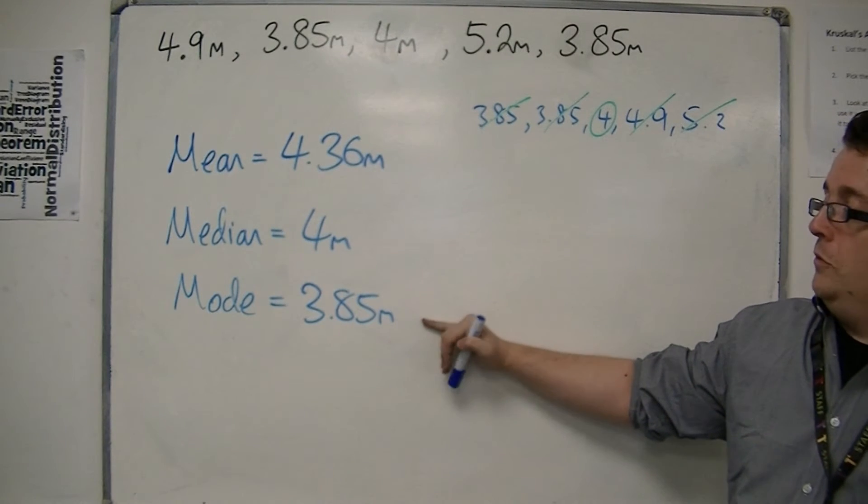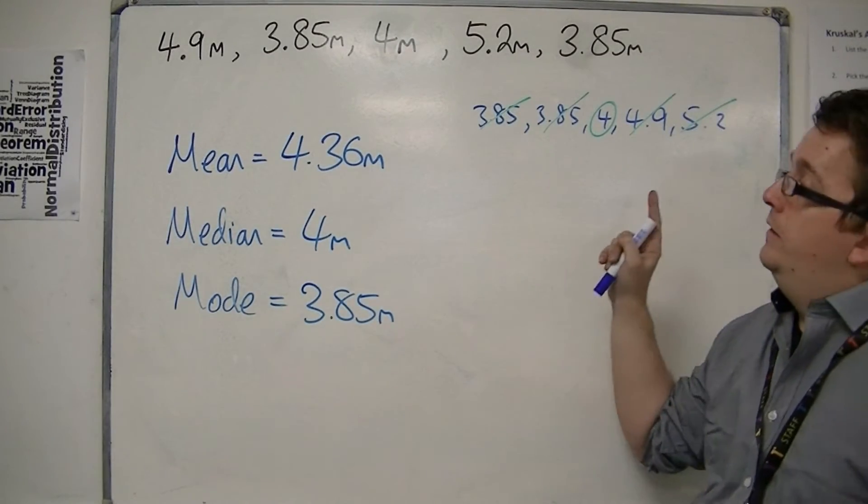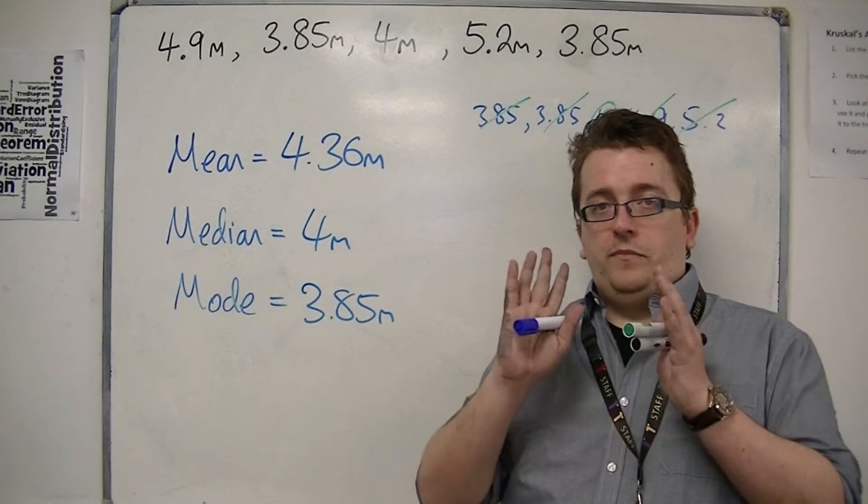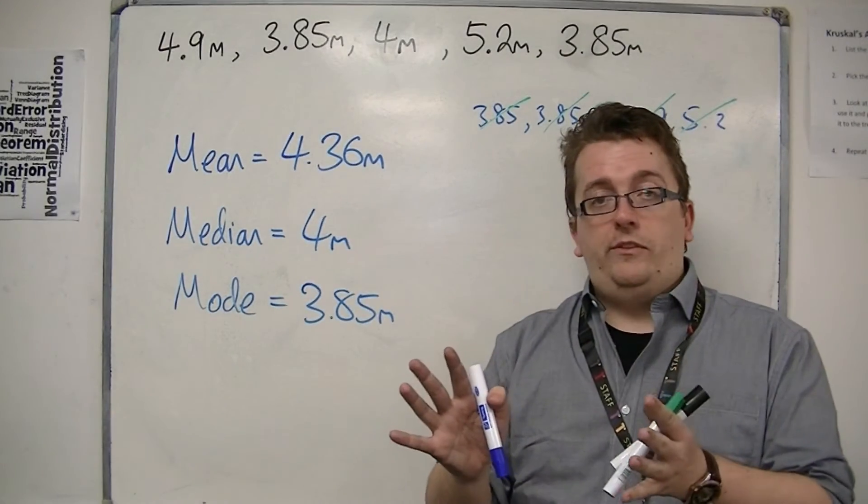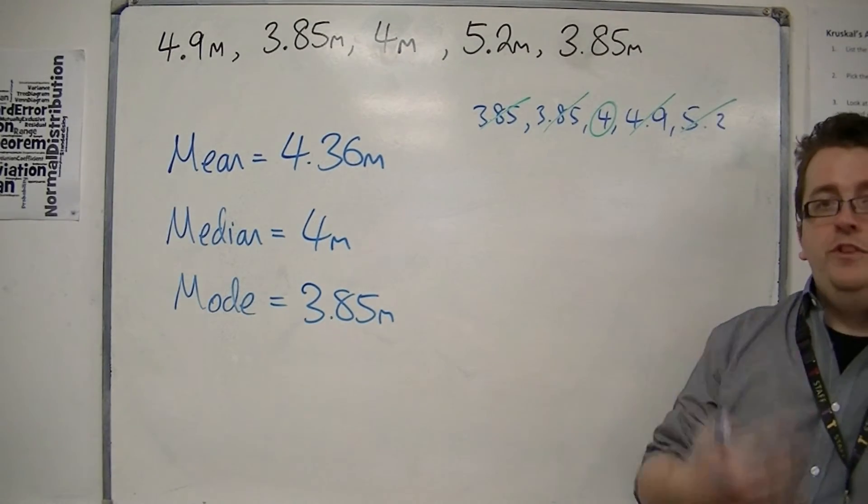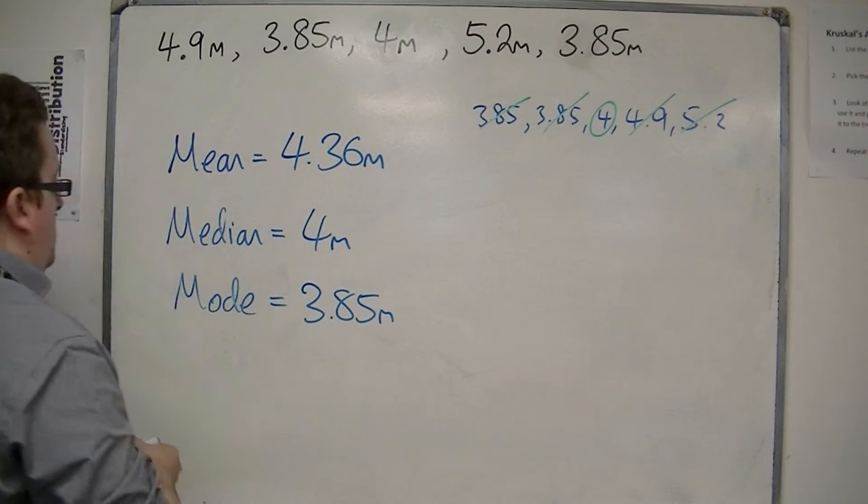It's also the fact that 3.85 is the smallest number for the trees. If you were to say that on average, the height of the trees was actually the smallest of them, then it wouldn't seem right. So in this case, it's just too small.